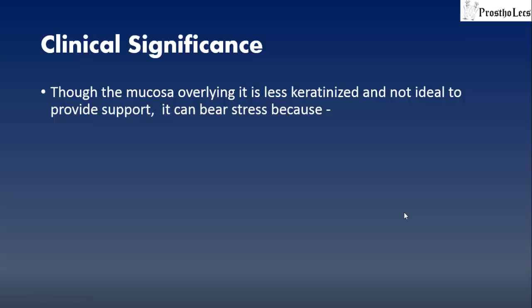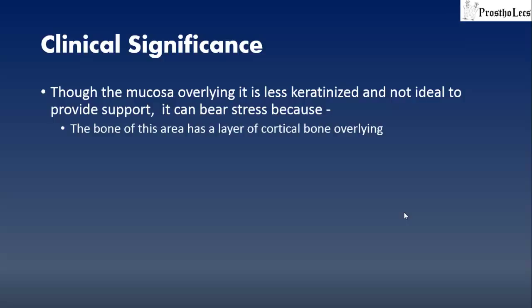The clinical significance of the buccal shelf area: although the mucosa overlying it is less keratinized and not ideal to provide support, this area has a layer of cortical bone overlying it. We all know that cortical bone is stronger than cancellous bone and is able to bear more pressure. Second reason: it lies at a right angle to the vertical occlusal forces, and bone is able to better withstand stress produced at right angles than at other angles.